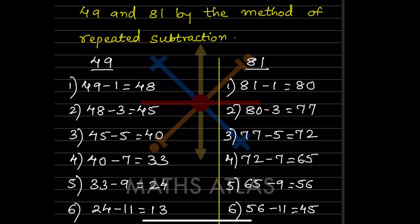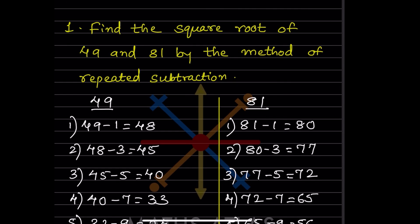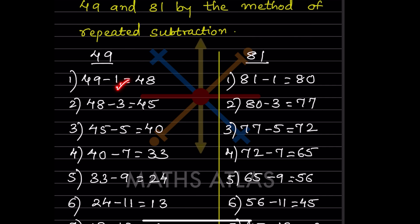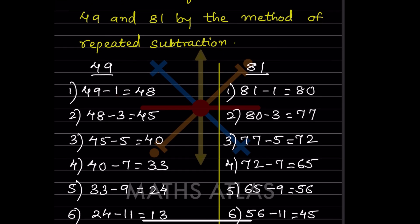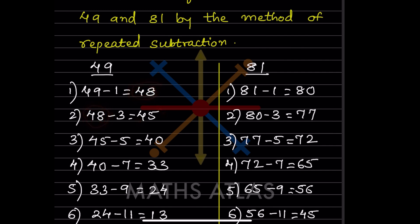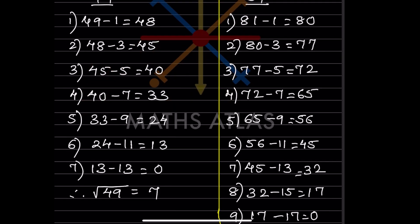I have written both numbers. For 49, you will subtract by 1 first: 49 minus 1 is 48. Then the numbers you subtract are the odd numbers: 1, 3, 5, 7, 9... So 49 minus 1 is 48, then 48 minus 3 is 45, then 45 minus 5 is 40.